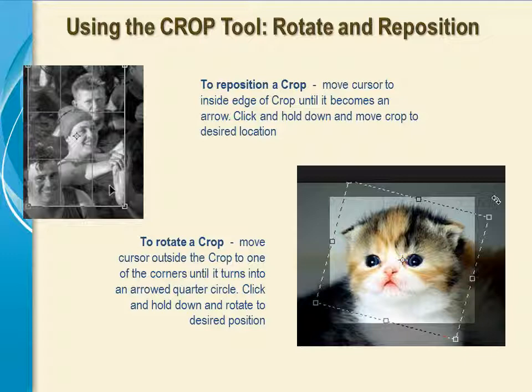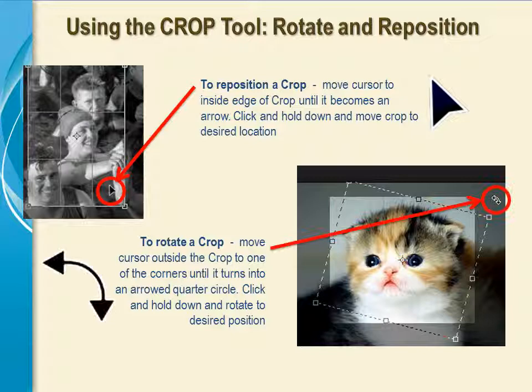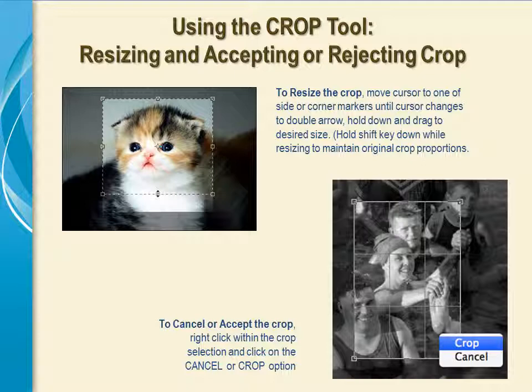Once the crop is delineated, you can reposition it by moving the cursor to the edge of the image until the cursor becomes an arrow, then click in the crop area and move it around if you desire. If you want to rotate the crop, move the cursor outside the crop to one of the corners until it turns into a quarter circle with arrows at the end, then click the mouse and drag to the desired rotation. You can resize the crop by moving the cursor to one of the corners or the square markers on the sides until the cursor turns into a line with arrows on both ends, then click, hold, and drag to the desired size. By holding the Shift key down as you drag, you maintain the proportions of the original crop.